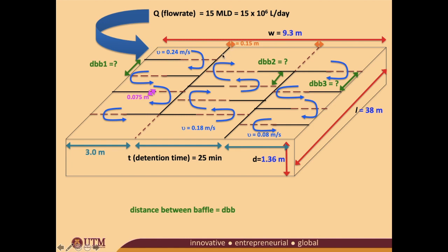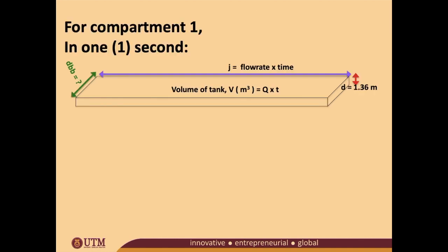Let's focus on one particular segment — the first segment of the channel, which I've highlighted with a black ring. That area shows the distance between baffles we want to find for compartment one. From our previous video, recall the diagram: j is the flow rate times time, this is the volume of the tank, and the depth is 1.36 meters, which has already been designed and won't change.